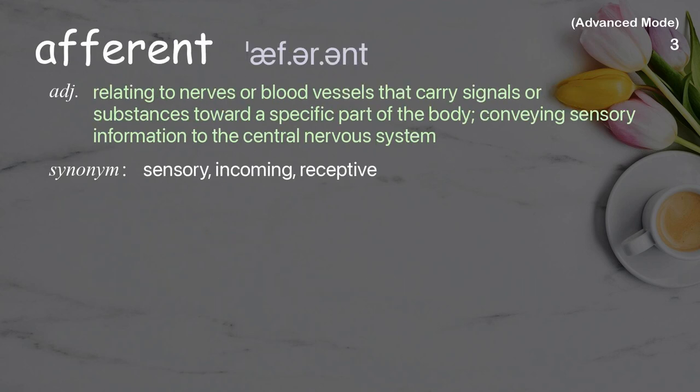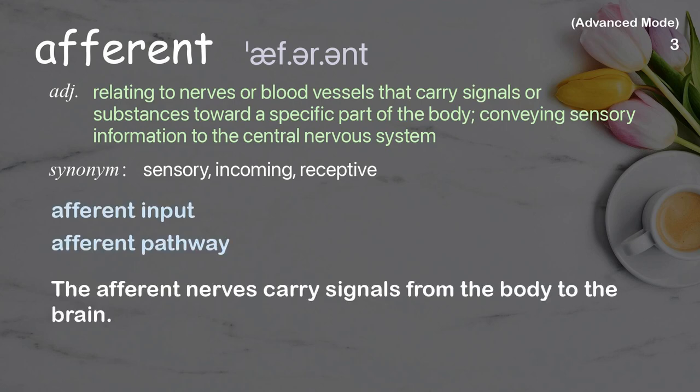Afferent. Relating to nerves or blood vessels that carry signals or substances toward a specific part of the body, conveying sensory information to the central nervous system. Examples: afferent input, afferent pathway. Afferent nerves carry signals from the body to the brain.